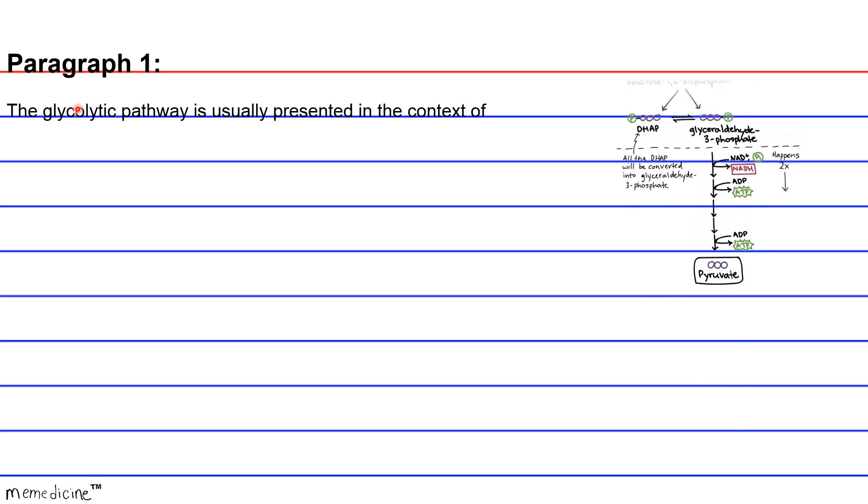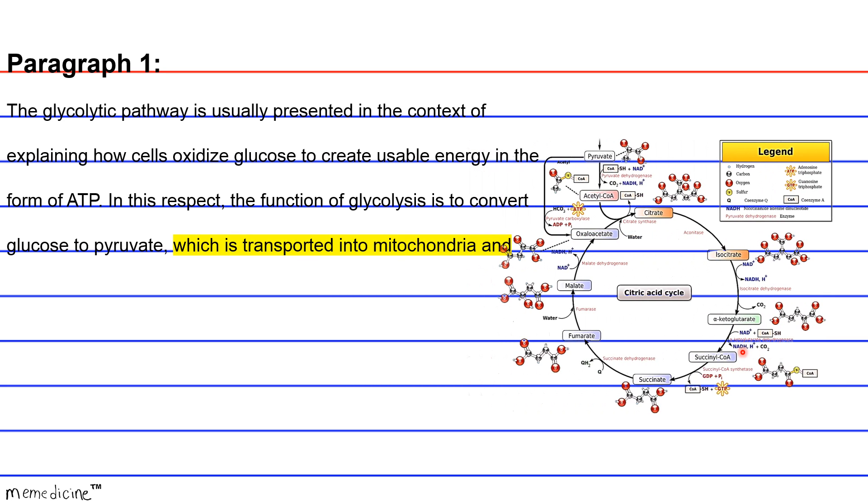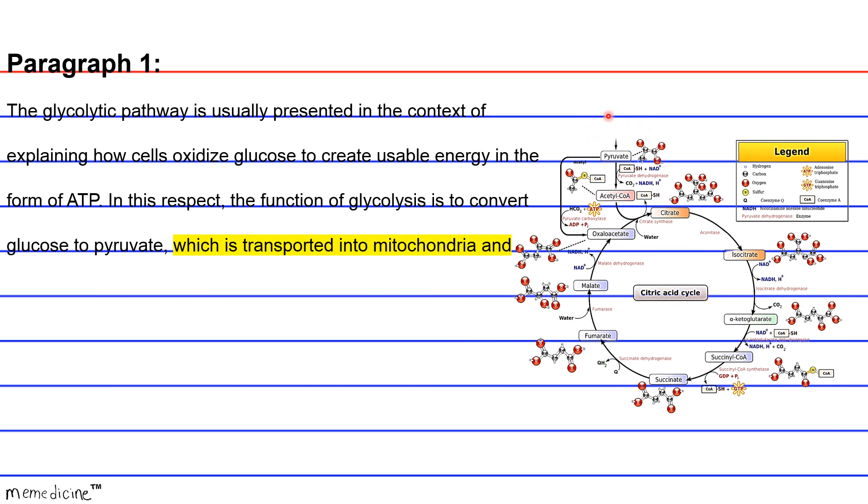Paragraph 1: The glycolytic pathway is usually presented in the context of explaining how cells oxidize glucose to create usable energy in the form of ATP. Here ATP is being used, but down here it's being generated. And then pyruvate is made. Note that this entire process is taking place inside the cytosol of the cell. In this respect, the function of glycolysis is to convert glucose ultimately into pyruvate.